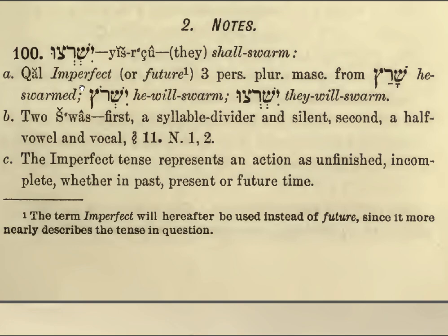This is Kal and it's the imperfect tense. Some grammar books call it the future tense. Generally speaking, the imperfect carries future meaning in Biblical Hebrew, but grammarians prefer to call it the imperfect. You'll find the same thing in the Aramaic course — it's called the imperfect tense, even though generally speaking the action referred to that's incomplete or imperfect is an action that's going to take place in the future. Third person plural.